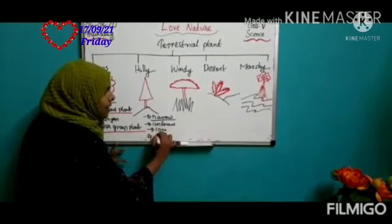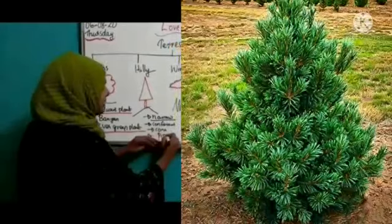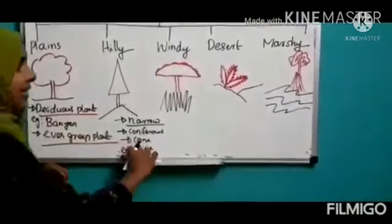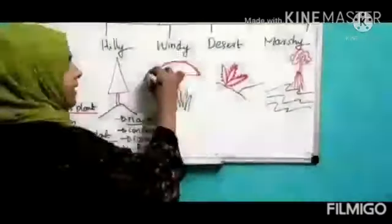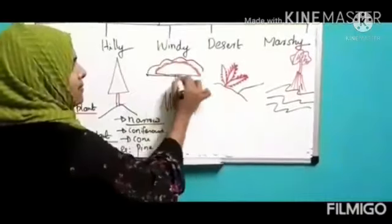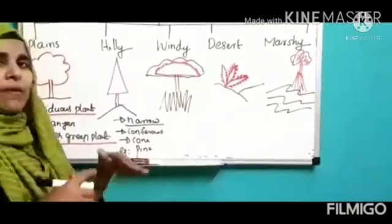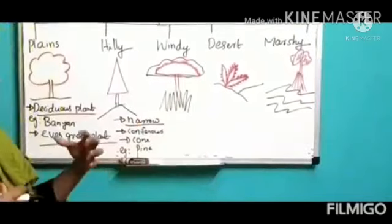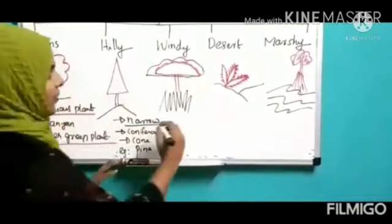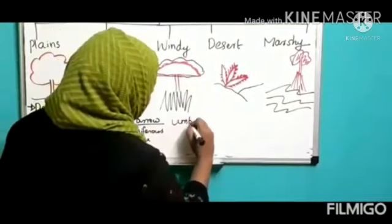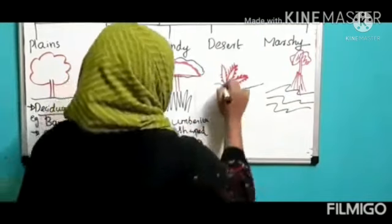In windy regions, mainly grasslands, the plants are umbrella-shaped. They grow in an umbrella shape because otherwise the wind would bend them down. To prevent this, branches spread out like an umbrella. The main adaptation of grassland plants is their umbrella shape.